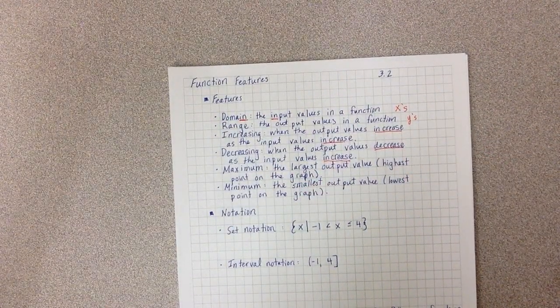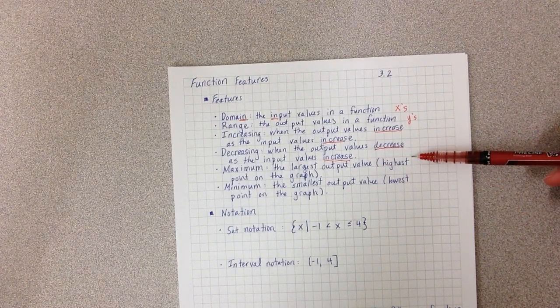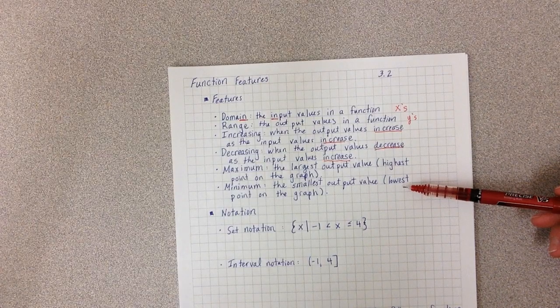We then have maximum and minimum. Maximum is the largest output value, meaning the highest on a graph. And minimum is the smallest, meaning the lowest.